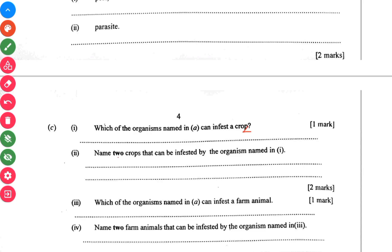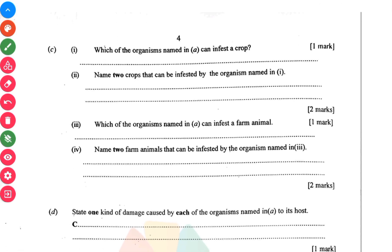Name two crops that can be infested by the organism named in A. Which of the organisms named in A can infest a farm animal? The tapeworm. Name two farm animals that can be infested by the organism named in III. We have sheep and goat.